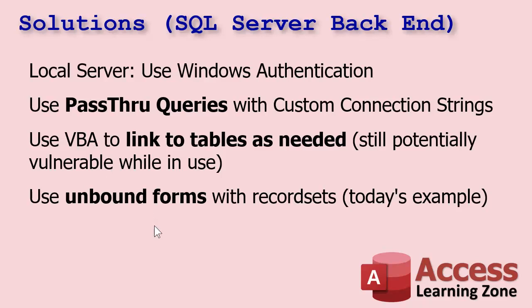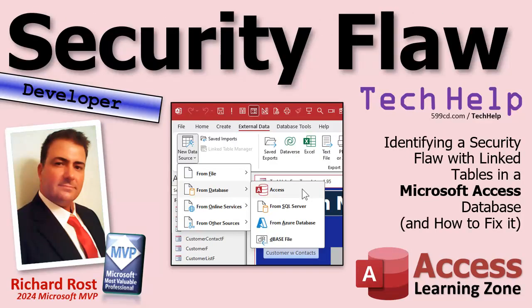The next two options for the Access backend: you can link to the tables as needed — when you open a form, link to its table and treat it like a linked table, though it's potentially vulnerable while it's in use. Or you can use the same unbound form trick connecting to a table or query using VBA code. I will show you an example of how to do this in tomorrow's video.